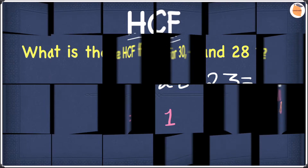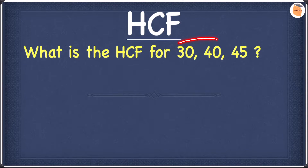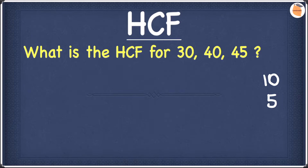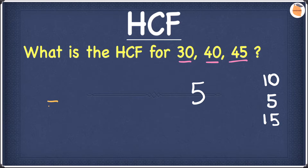Now let's look at the fourth HCF trick. The example is: what is the highest common factor for 30, 40, and 45? We have three numbers here. Find the difference between the first and second: 40 minus 30 is 10. Then between the second and last: 45 minus 40 is 5. And between the first and last: 45 minus 30 is 15. Out of 10, 5, and 15, the smallest is 5. We check whether 5 is a factor of 30, 40, and 45 — yes it is. So the highest common factor is 5.